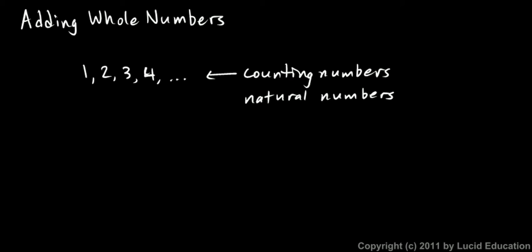So if you put a zero in there, along with the counting numbers or the natural numbers, all of those numbers together are called whole numbers. So when you hear someone refer to whole numbers or to the set of whole numbers, they're just talking about these: zero, one, two, three, four, and so on, as high as you want to go.